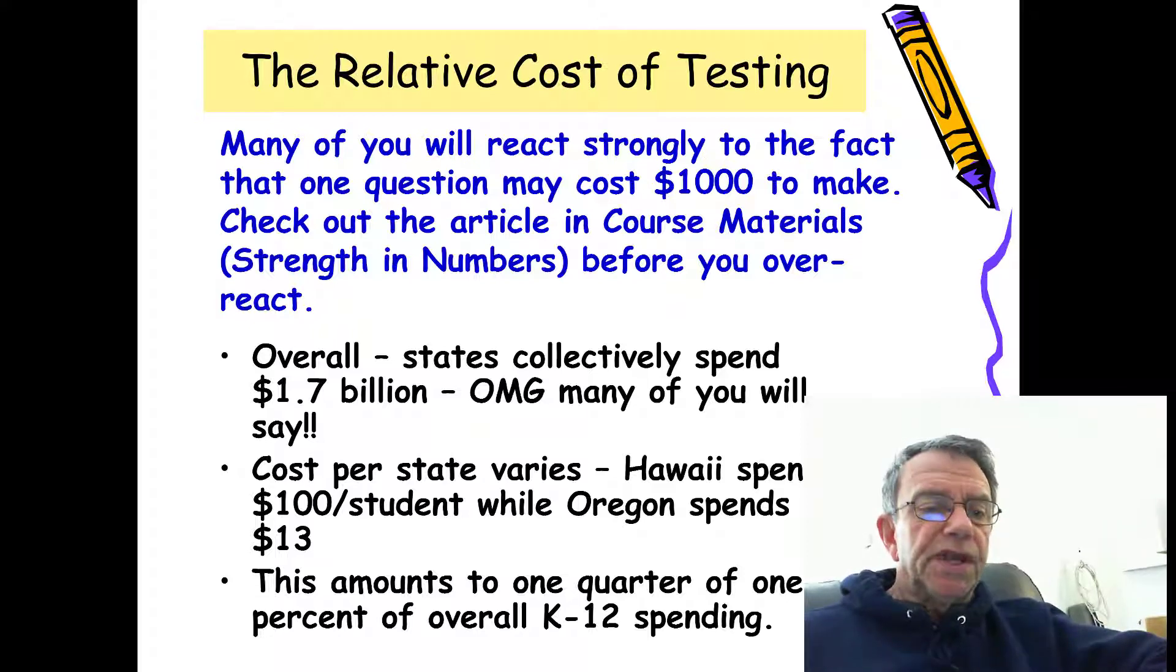You should also look at the website procon.org, where you will find arguments on both sides of the standardized test question. And you can see that there's a lot of them. And many of them are based on research. Many of them are just based on what commonly happens when students are preparing for these tests. So you can see that there are 22 different pros and cons that are given in this article. So make sure you check that out.